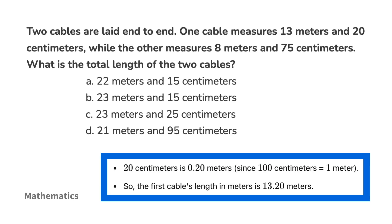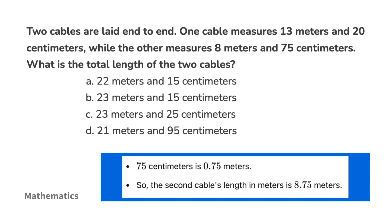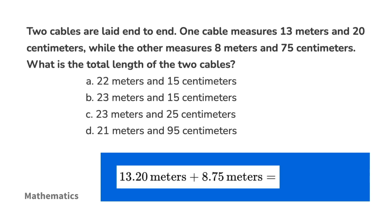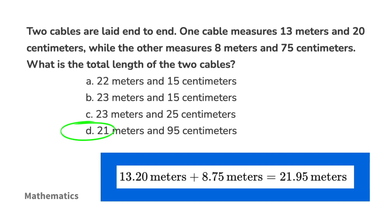We need to convert the measurements into meters. The first cable is 13 meters and 20 centimeters — 20 centimeters is 0.2 meters, since 100 centimeters equals 1 meter — so the first cable is 13.2 meters. The second cable is 8 meters and 75 centimeters — 75 centimeters is 0.75 meters — so the second cable is 8.75 meters. Adding the two: 13.2 plus 8.75 equals 21.95 meters, giving us answer option letter D.